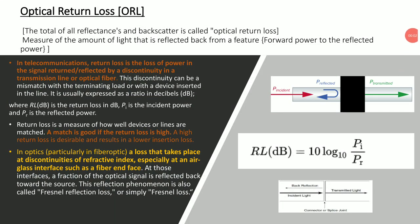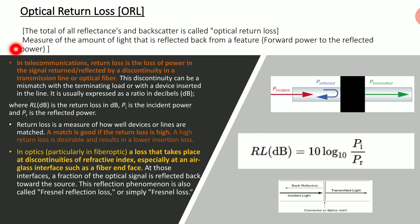Hello friends. Today we will discuss about optical return loss in fiber media. The total of all reflectance and backscatter is called optical return loss. The measure of the amount of light that is reflected back — the ratio of forward power to reflected power — is called optical return loss.